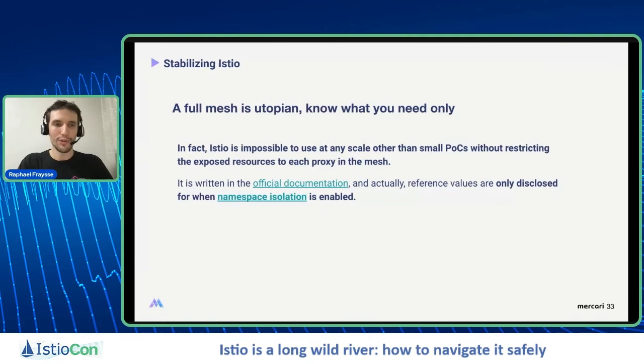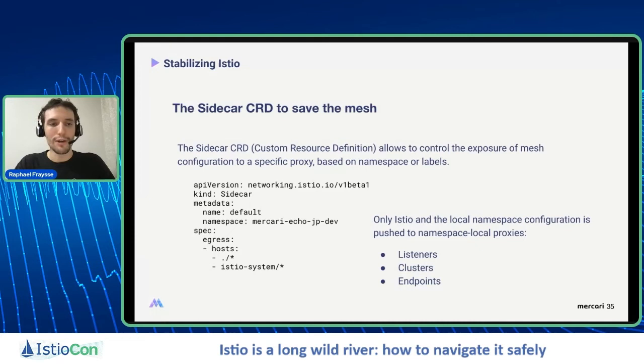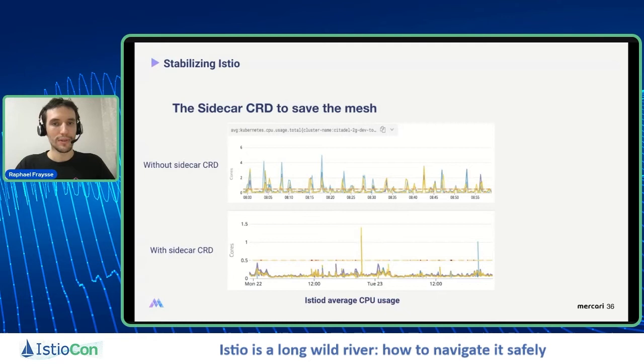Although it's formulated differently, reference values are only disclosed for when namespace isolation is enabled. What is namespace isolation? It's called the sidecar CRD, which is a bit of a misleading name. It allows you to control the exposure of mesh configuration to specific proxies based on namespace or labels. Here we have a simple sidecar example — we have an allow list that shares the listeners, clusters, and endpoints with the local proxies to leverage Istio features.